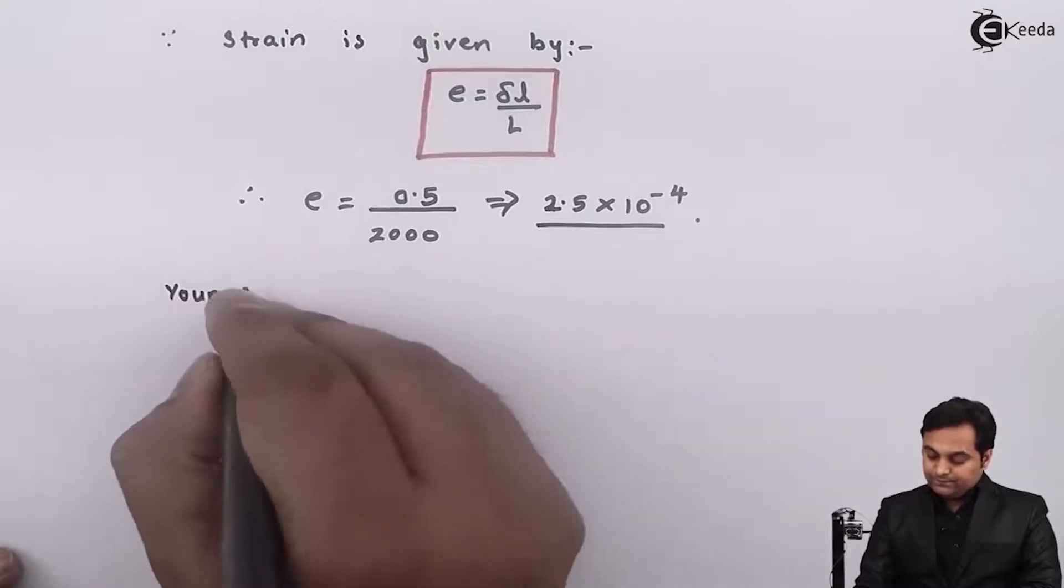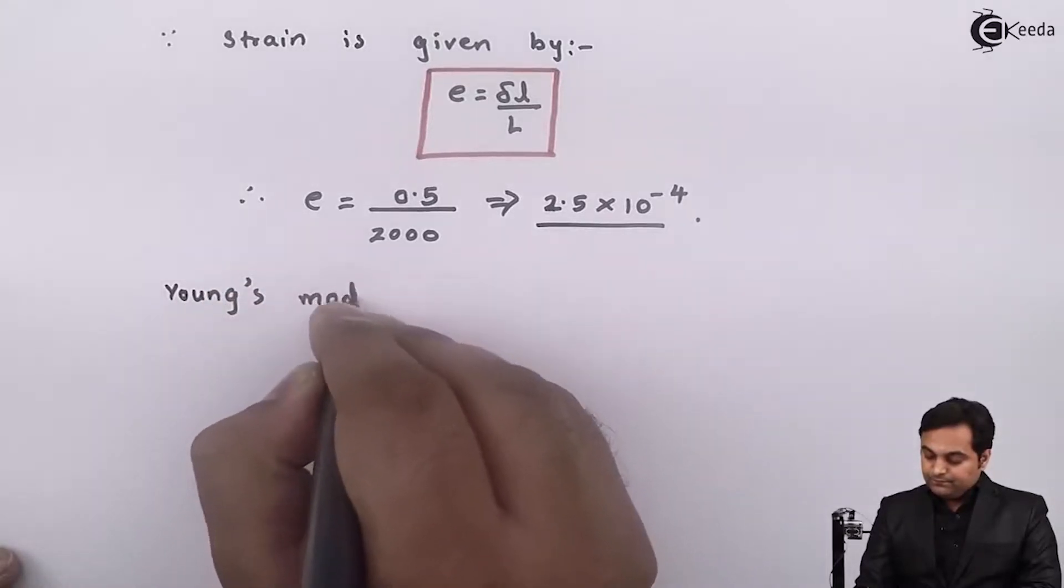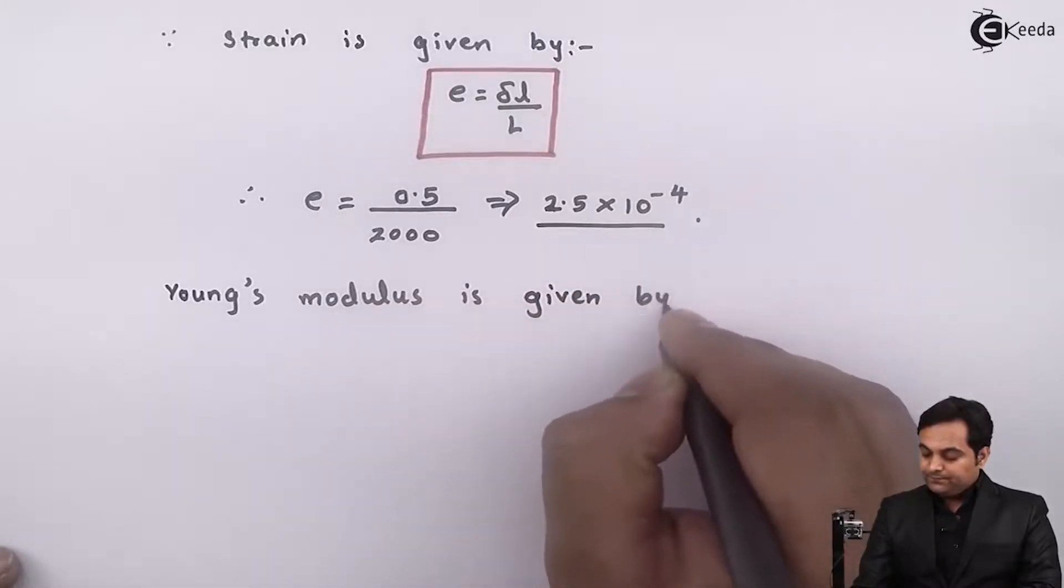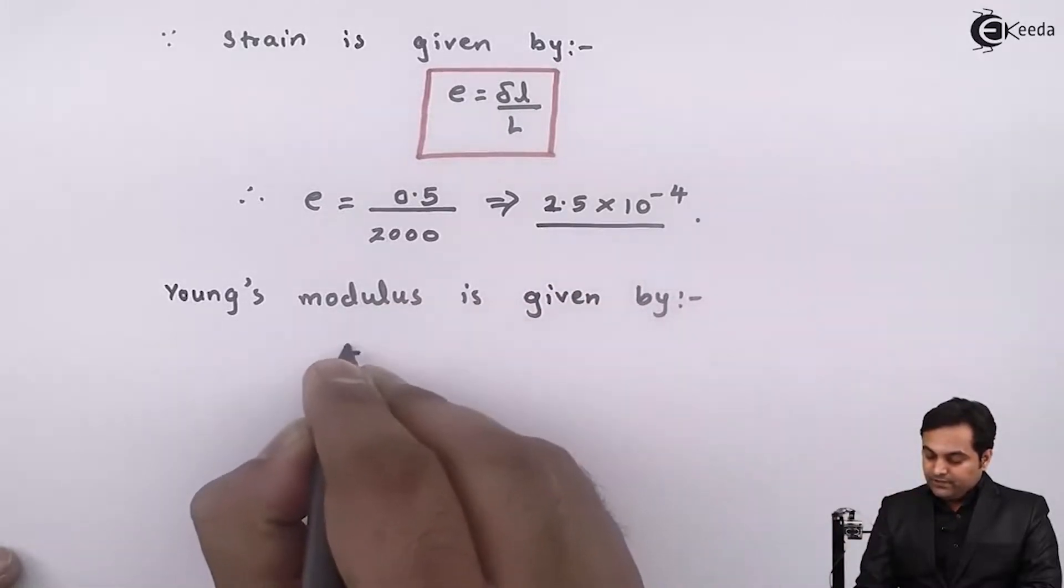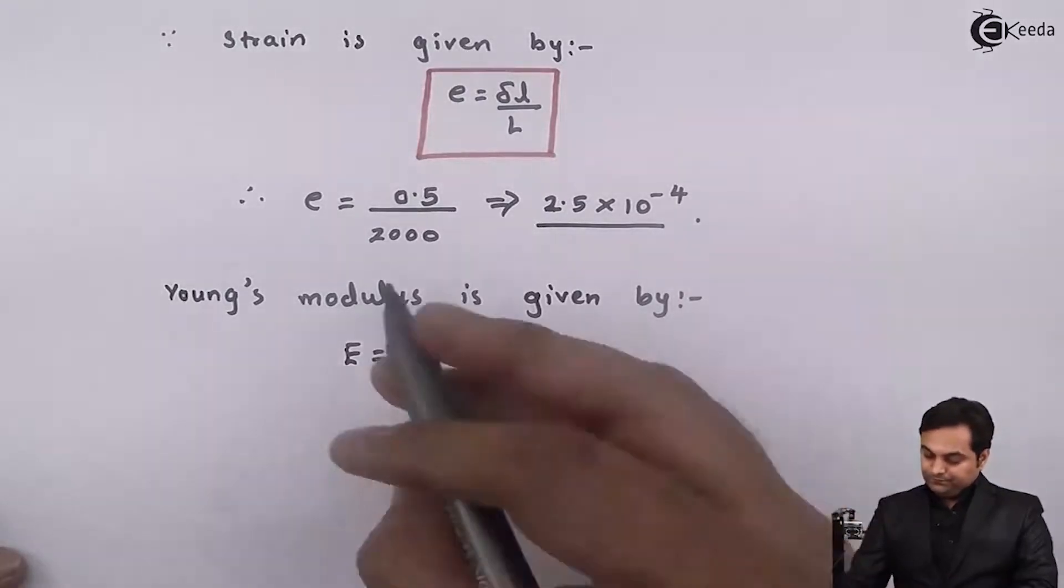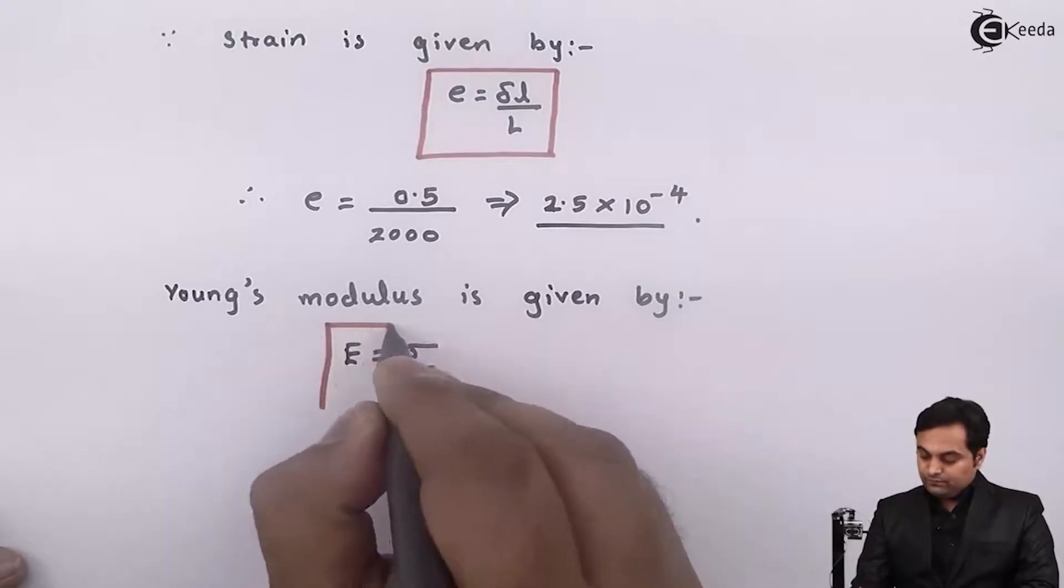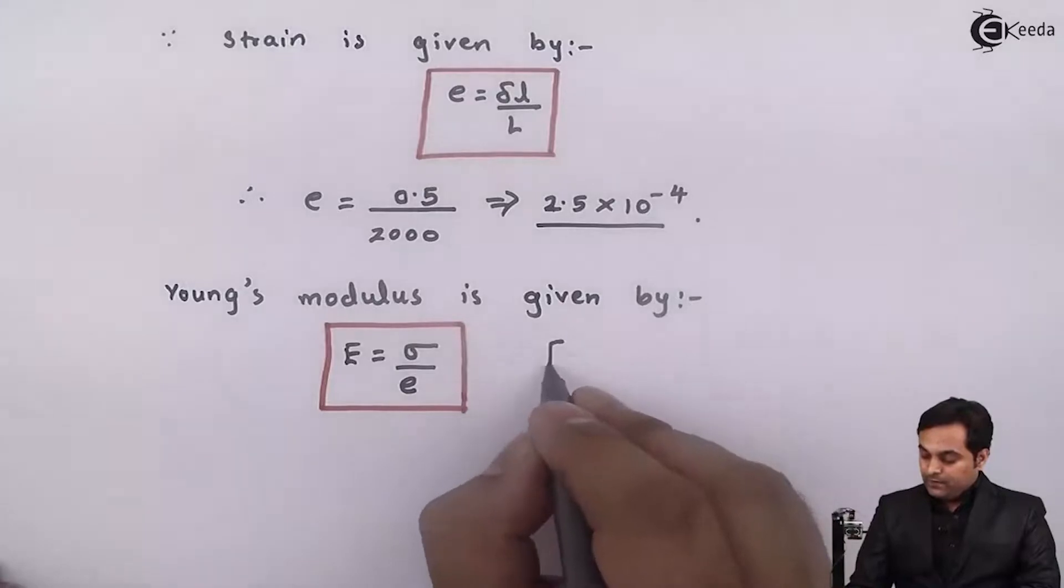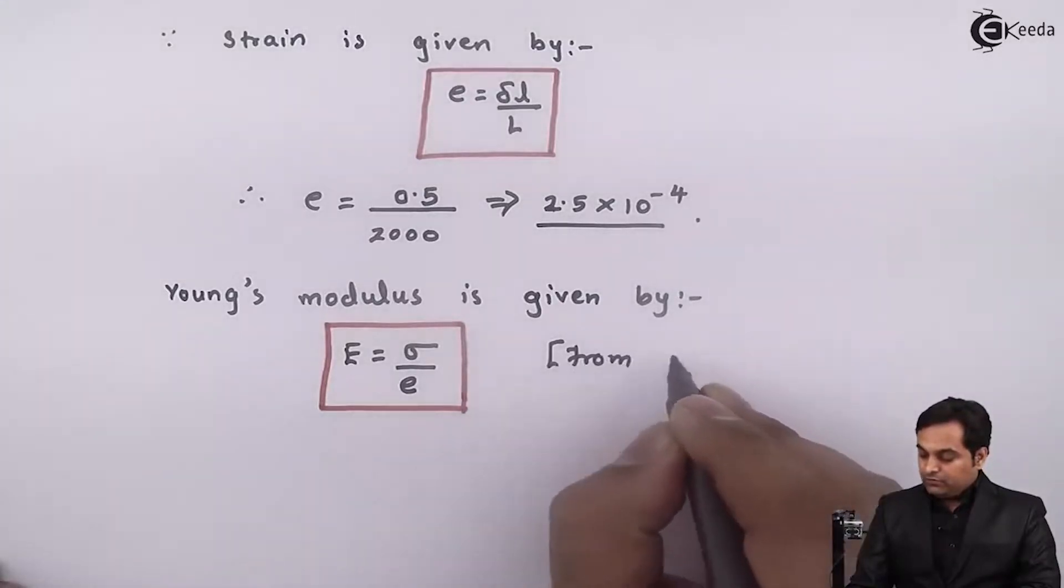Next after this I can say that we had one formula from Hooke's law and that formula is Young's modulus is given by capital E it is equal to stress upon strain. This has come from Hooke's law.